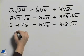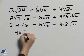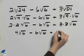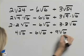We can now multiply. We'll have 4 square root of 6, minus 6 square root of 6, plus 9 square root of 6.